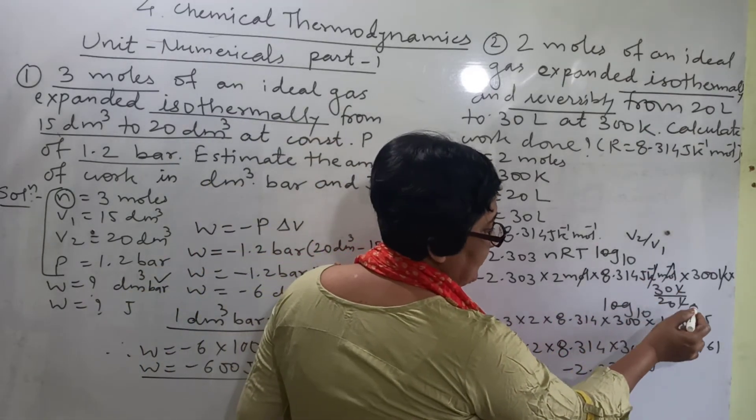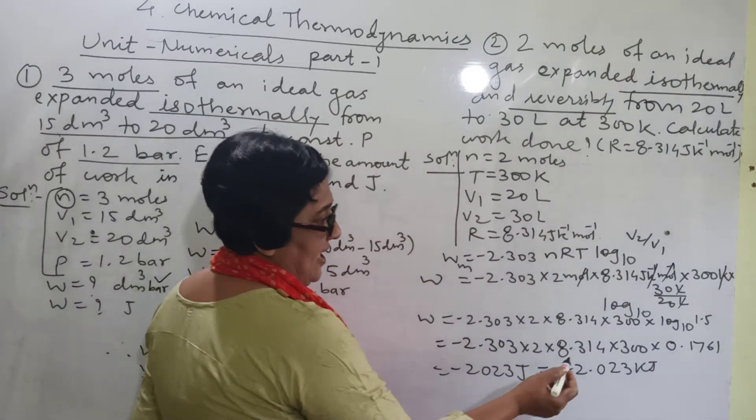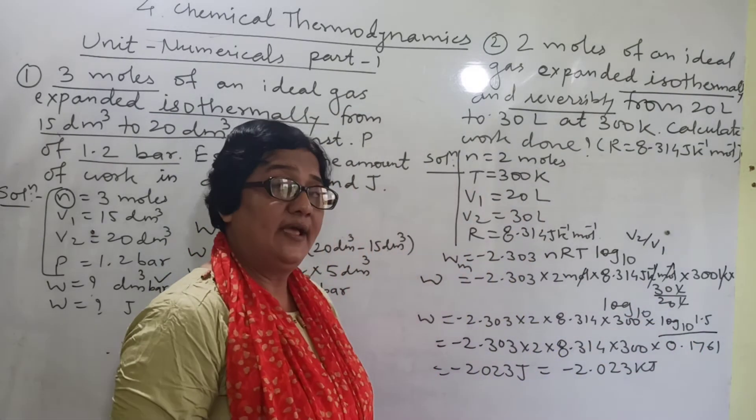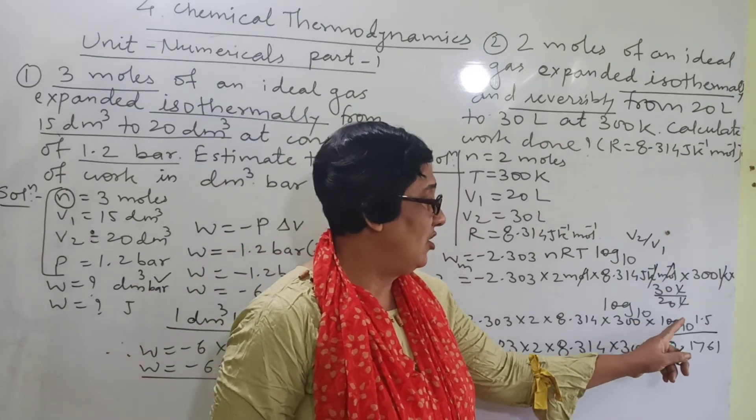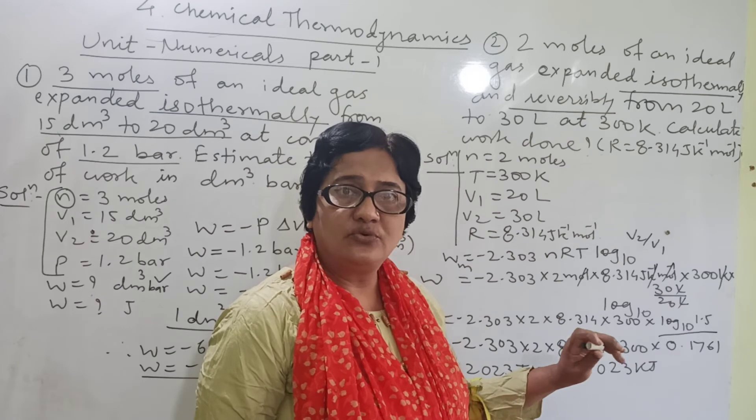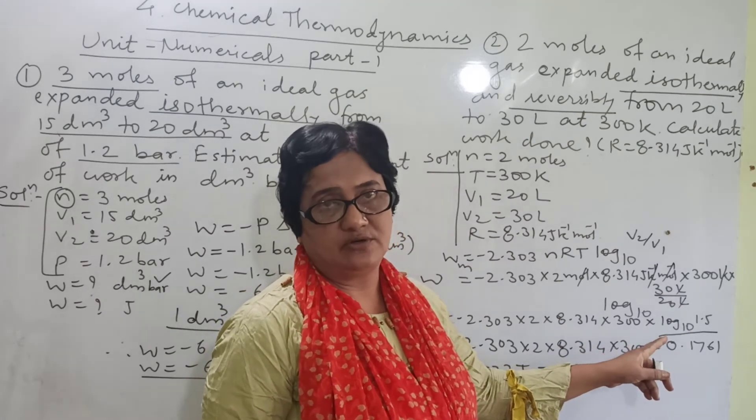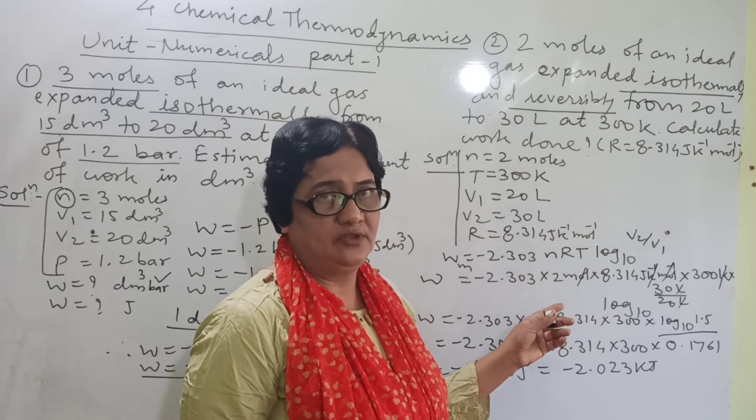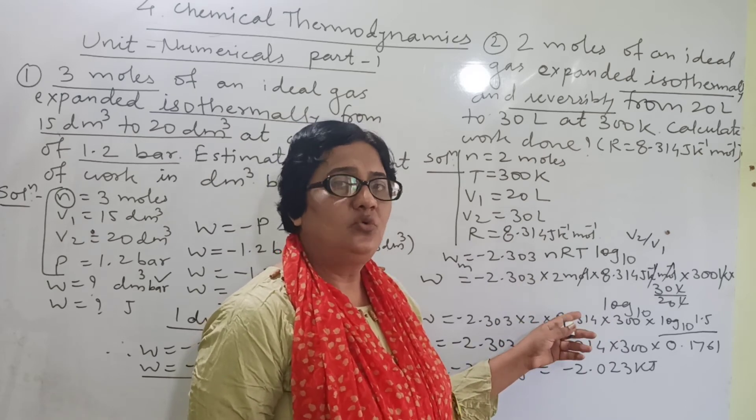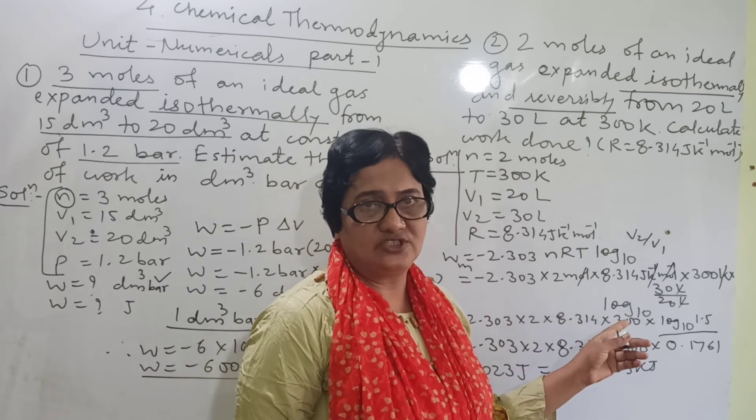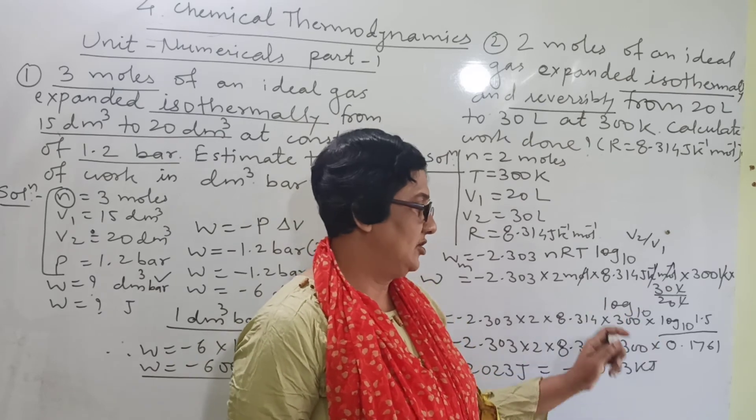And now first clear the log to the base 10, 30 divided by 20. And it comes out to be log 1.5. Now again remember, when the log of only one figure you are going to take, you do not have to take the antilog. When antilog is to be taken, when more than 2, more than 1 or 2 or more than 2 figures are used for calculation of log, then antilog is to be taken.